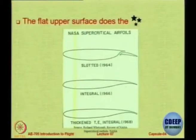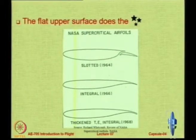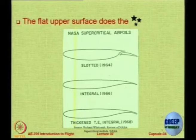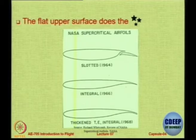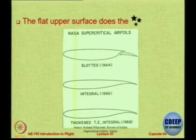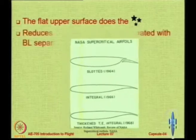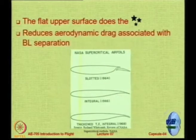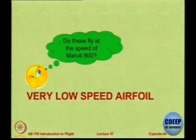The features of supercritical aerofoils are: a flat upper surface, a rounded leading edge with a large radius, a high-cambered aft section, and a reflex on the back. Many of these aerofoils have been designed by NASA — slotted, integral, and thickened trailing edge variants are available. The main person behind supercritical aerofoils is scientist Richard Whitcomb.